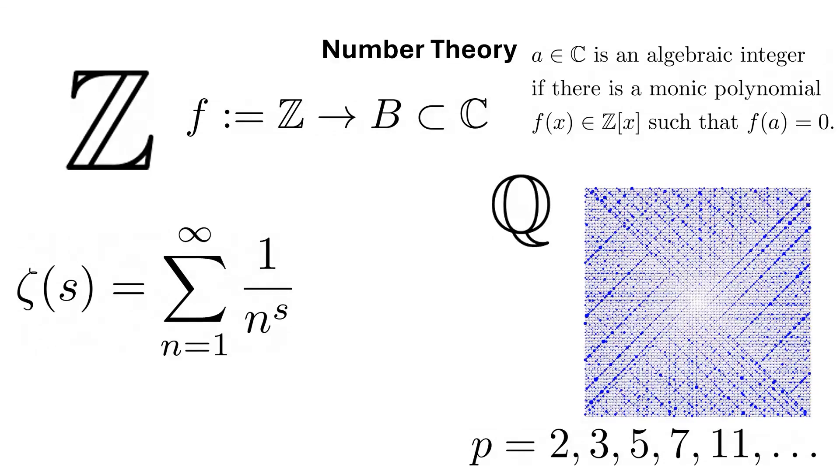On the other hand, rings of algebraic integers can be viewed as lattices in R^n. The geometry of such a lattice informs our understanding of the corresponding ring. Number theory that employs ideas from geometry is referred to as geometric number theory.